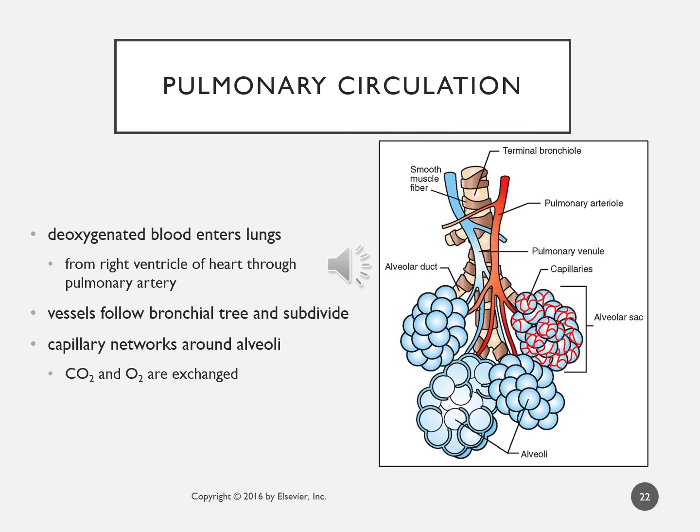Pulmonary circulation receives deoxygenated blood from the right ventricle of the heart through the pulmonary artery. The vessels follow the bronchial tree and subdivide into capillary networks surrounding the alveoli, where carbon dioxide and oxygen are exchanged. Blood then travels from the pulmonary venule through the pulmonary vein into the left atrium of the heart.